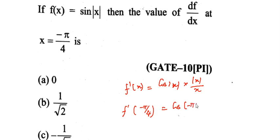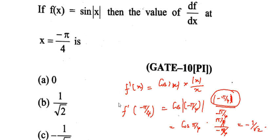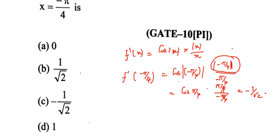Now substitute x = -π/4: f'(-π/4) = cos(|-π/4|) · (|-π/4| / (-π/4)) = cos(π/4) · (π/4) / (-π/4). You can cancel π/4, giving cos(π/4) · (-1) = -1/√2. So the answer is subdivision 3.